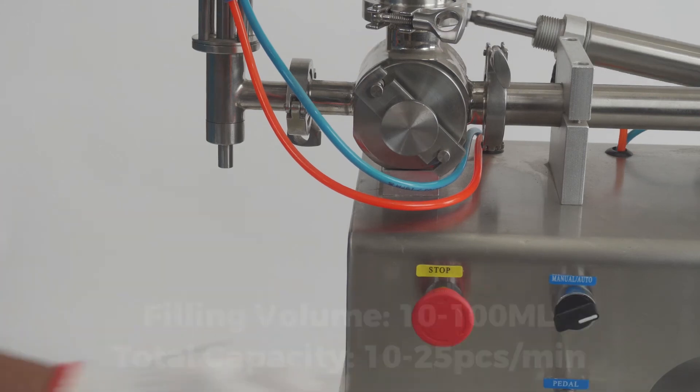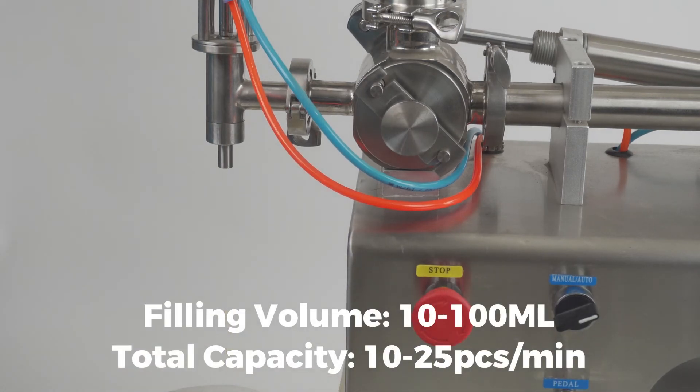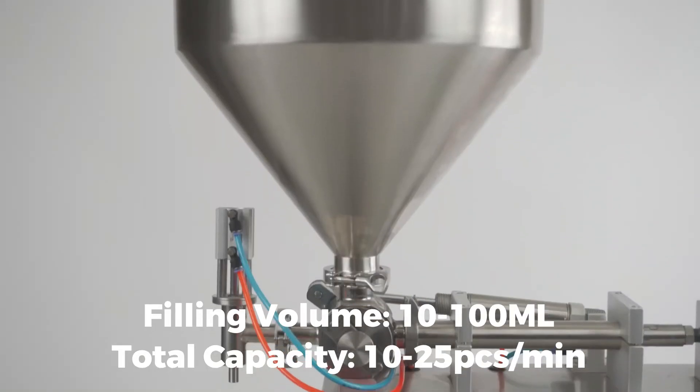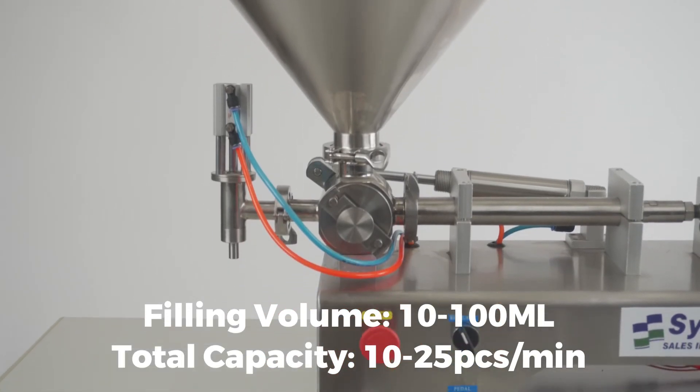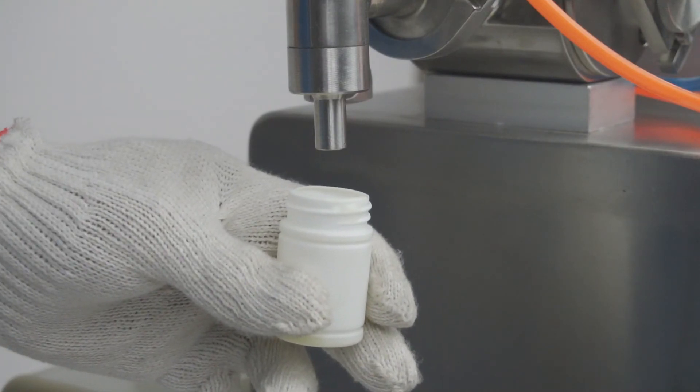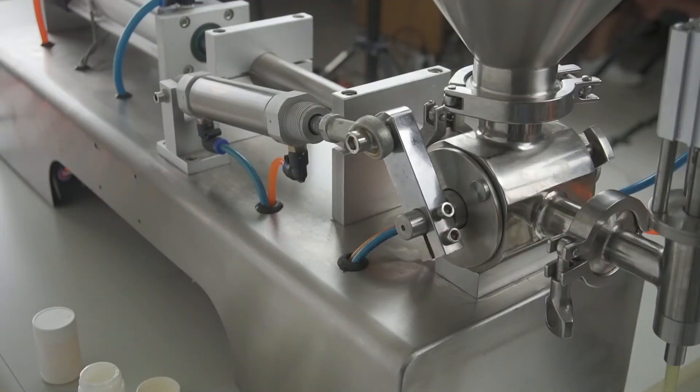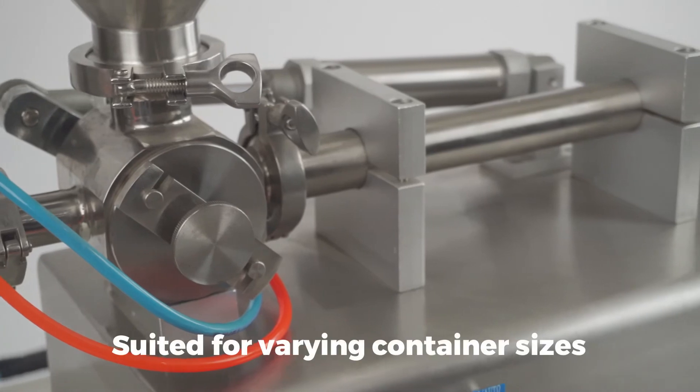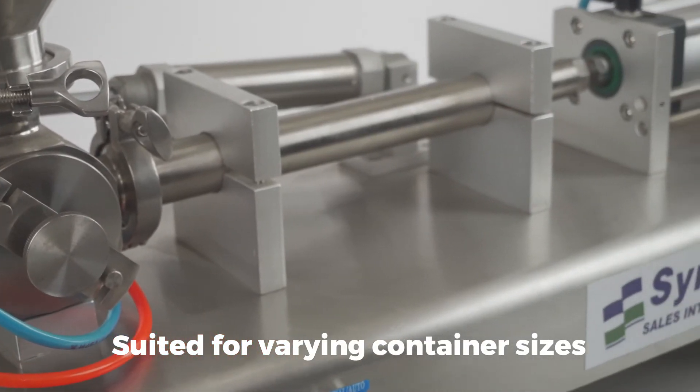This machine can accommodate a filling volume of 10 to 100 milliliters and has the capacity to hold 10 to 25 pieces per minute. The operator can adjust the amount of dispensed liquid by turning the swivel located at the top of the piston. This is best suited for products with varying container sizes.